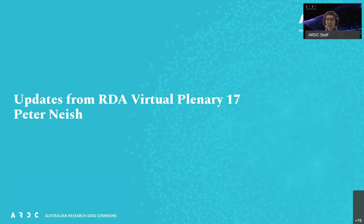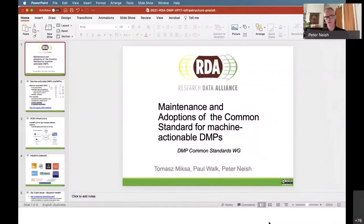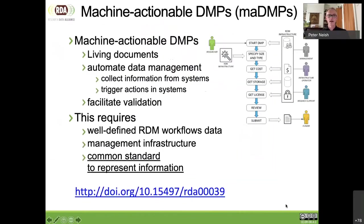I'm a co-chair of the DMP Common Standards Working Group, along with Thomas Mixart and Paul Walk. Just a super quick introduction to machine actionable DMPs, or MA DMPs for short. They're an idea that came about to try and take a standard DMP — which was just blobs of text that researchers would submit to funders to fulfill an obligation — to something that's actually useful, that was machine actionable, that could be used to trigger actions, could be validated, and could actually have information that could be computed on.